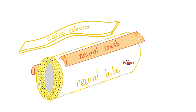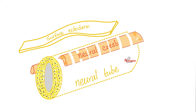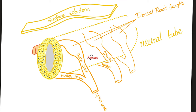Here is the epidermis of skin from surface ectoderm, and here is the neural tube and neural crest. The neural tube becomes the brain and spinal cord; the neural crest becomes cranial nerves and spinal nerves. Inside the spinal cord is the spinal canal, surrounded by the vertebral canal — the bony canal. The spinal cord with its roots lies inside the vertebral canal.